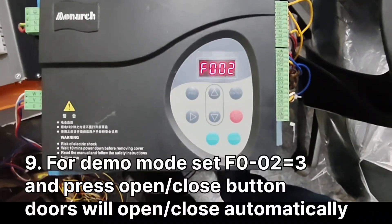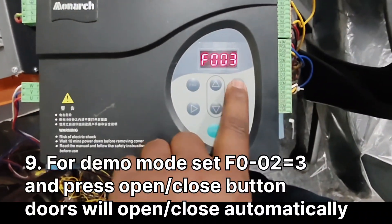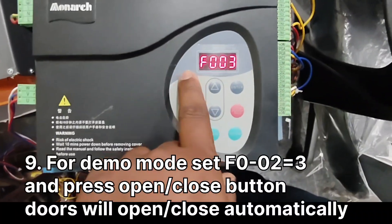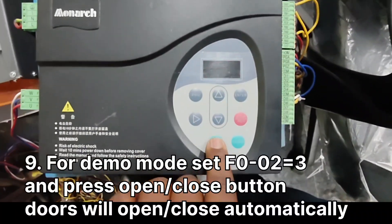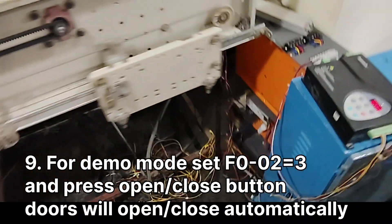For demo mode, set F002 to 3. Press open or close button and door will automatically open and close.